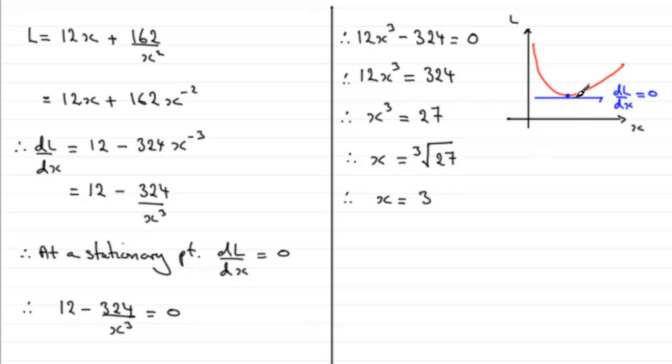So x is 3. This point here is where x equals 3, but we've got to find the minimum value of L. So what we need to do is substitute this value, when x is 3, back into this equation. So we can say that when x equals 3, L equals 12 times 3 plus 162 divided by 3 squared. If you work that out, you end up with 54. 54 centimeters then is that minimum length.